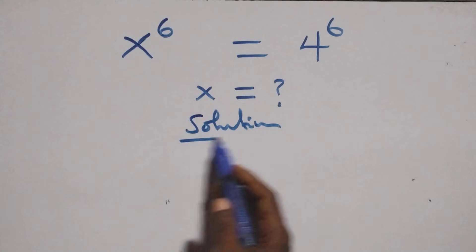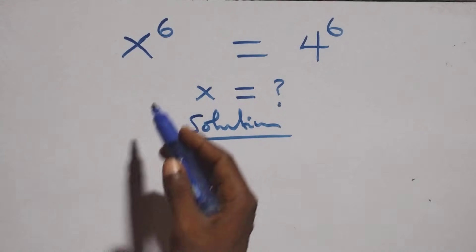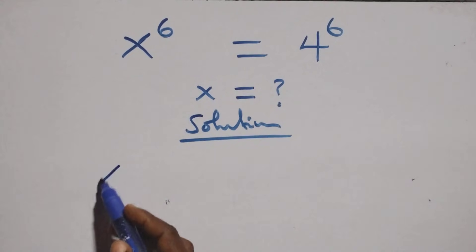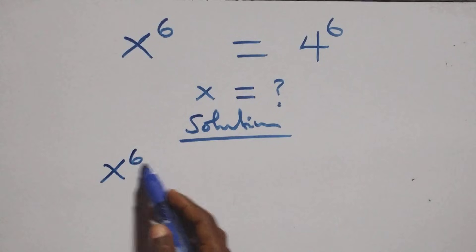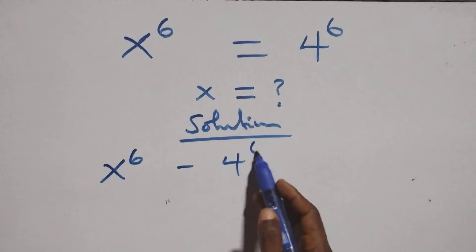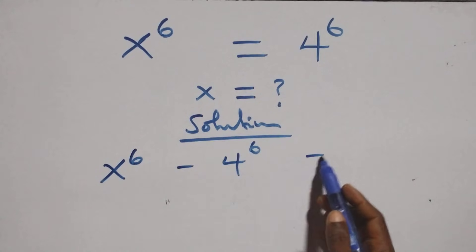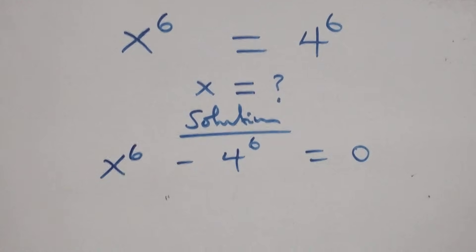And what we have here: we take 4 raised to power 6 to the left hand side and we have x raised to power 6 minus 4 raised to power 6 equals to 0.